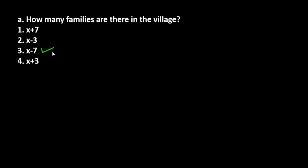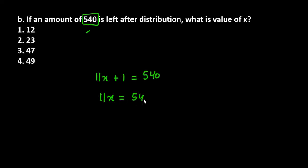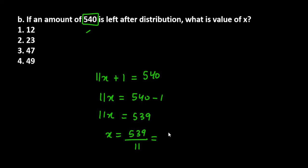So the right option is the third part — all we had to do was divide and find the quotient. Now moving to the second part: it says if an amount of 540 rupees is left after distribution, what is the value of x? The amount left is 11x + 1, which equals 540. So 11x = 539, and when we divide, x = 49.